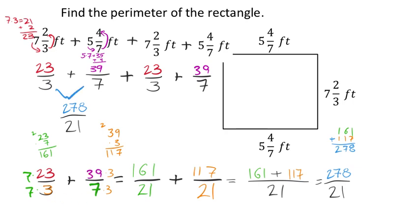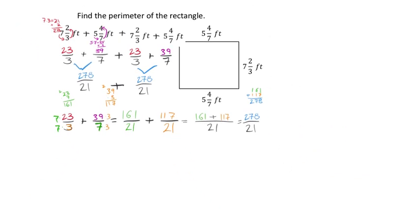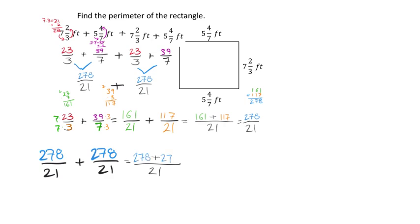Since the other pair of sides also gives 278 twenty-firsts, we add those together: 278 plus 278 equals 556 twenty-firsts. Checking if 556 is divisible by 3 or 7 — it is not, so this fraction cannot be simplified. But since our original problem used mixed numbers, we need to convert this back to a mixed number.